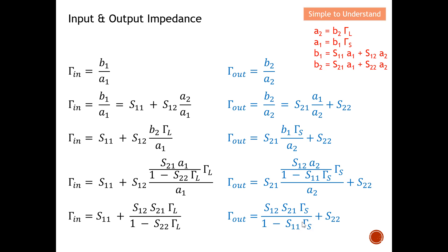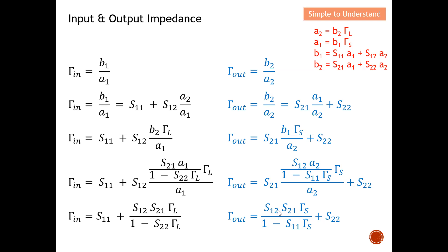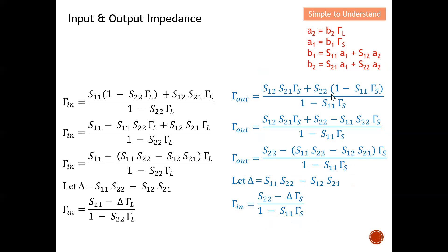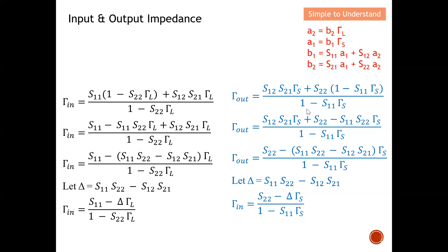Taking the common factor, S22 multiplied by (1 - S11·Γs), yields the final simplified form of the output reflection coefficient. Note: there was a typo on the slide — that expression is the output reflection coefficient. With this, I have successfully described both the input reflection coefficient and the output reflection coefficient in terms of S-parameters. Thank you so much for the support — please like and subscribe, and I hope to see you soon. Bye for now.